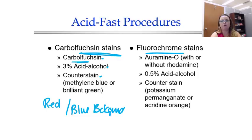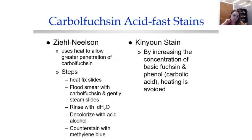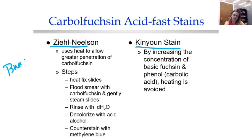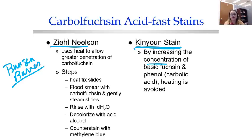There's also a fluorochrome stain — it's a fluorescent stain, and the stain actually glows a pretty green color. When talking about carbofusion acid stains, there are actually two: Ziehl-Neelsen and Kinyoun stain. Ziehl-Neelsen requires heat to allow the stain to penetrate the cell wall — typically done with a Bunsen burner — and it's fallen out of favor because lighting things aflame in a lab is frowned upon. Kinyoun stain basically increased the concentration of the basic fuchsin and phenol, so you don't have to heat it. Kinyoun stain has become more common.